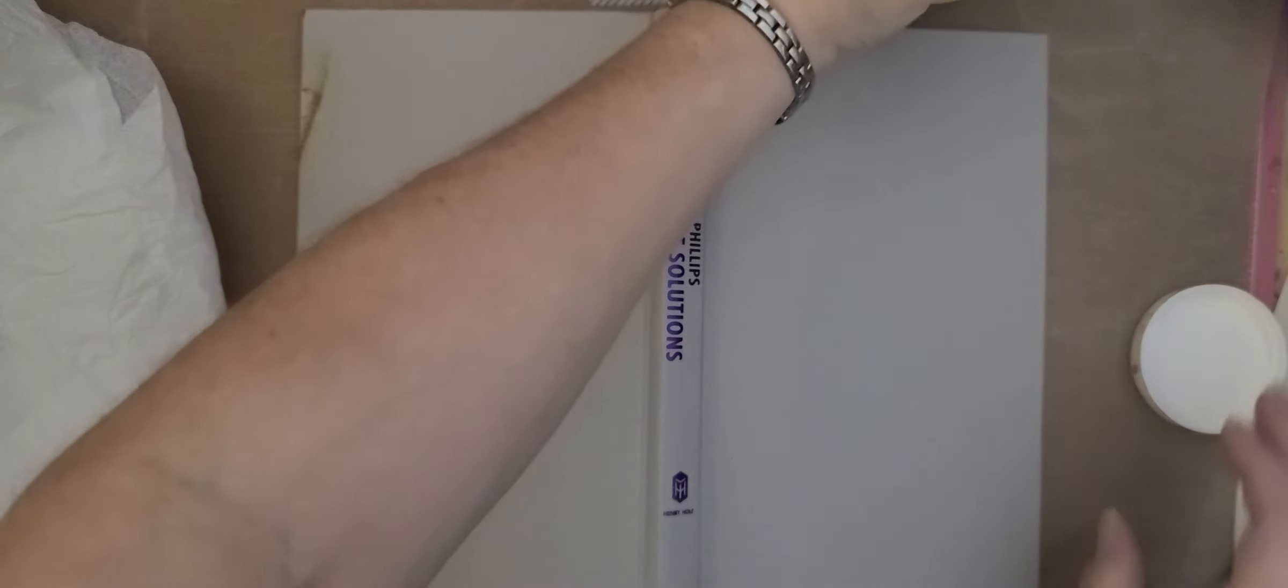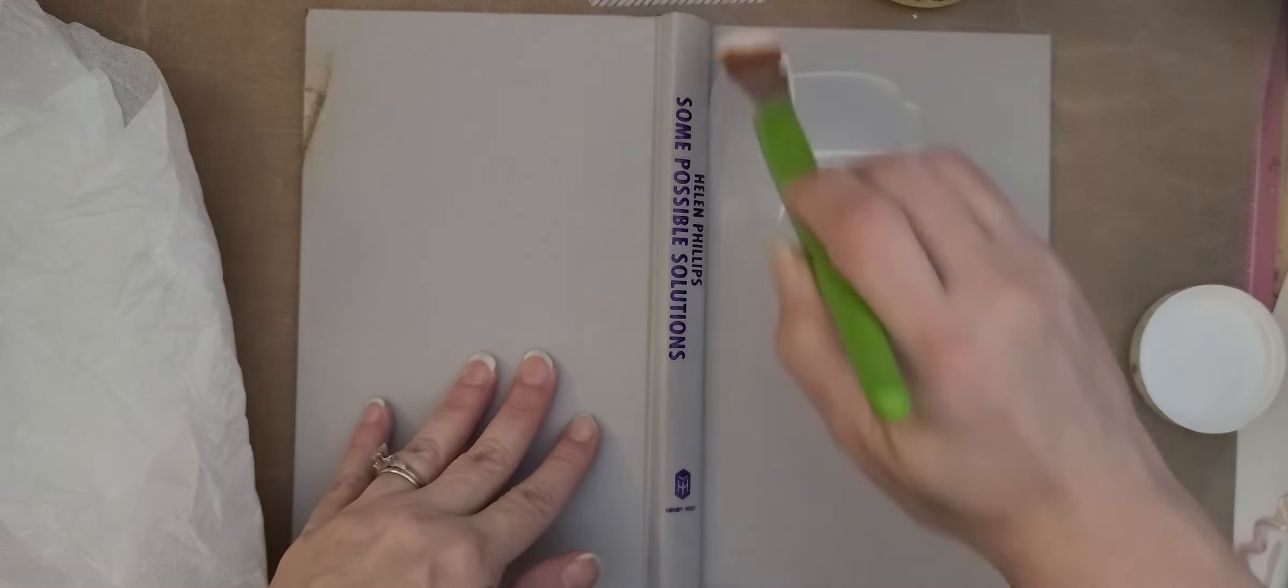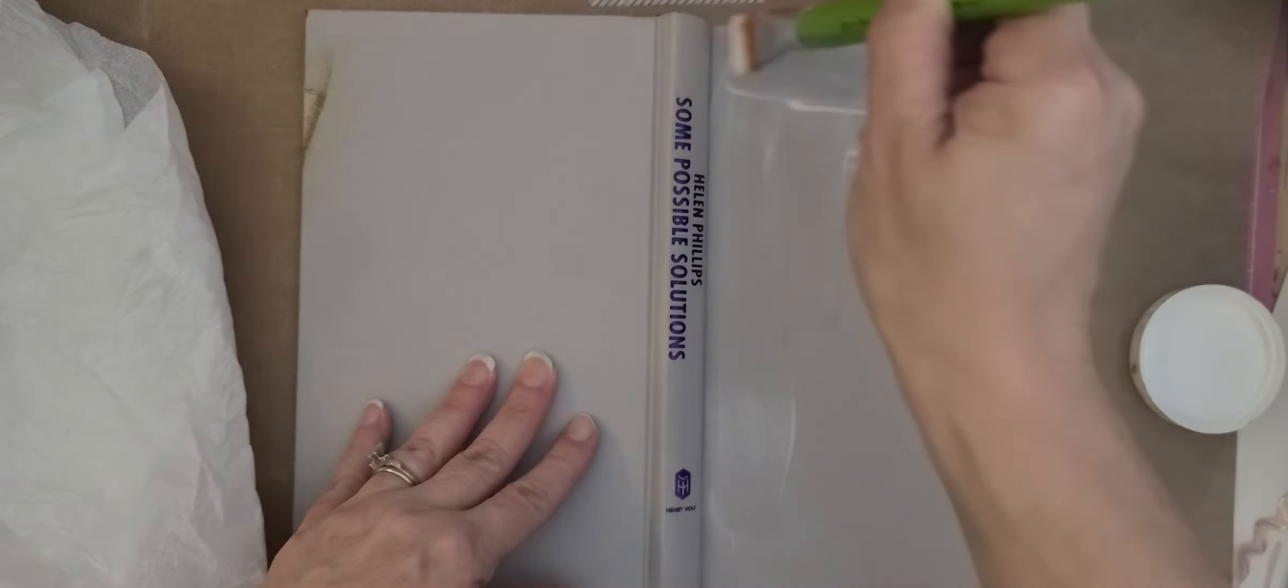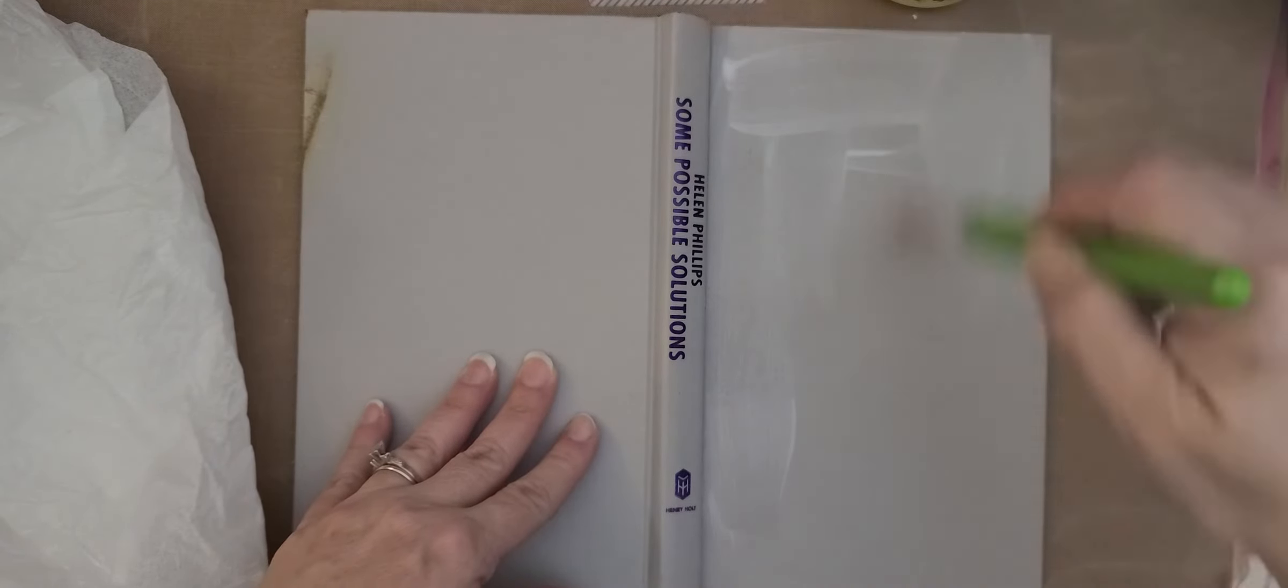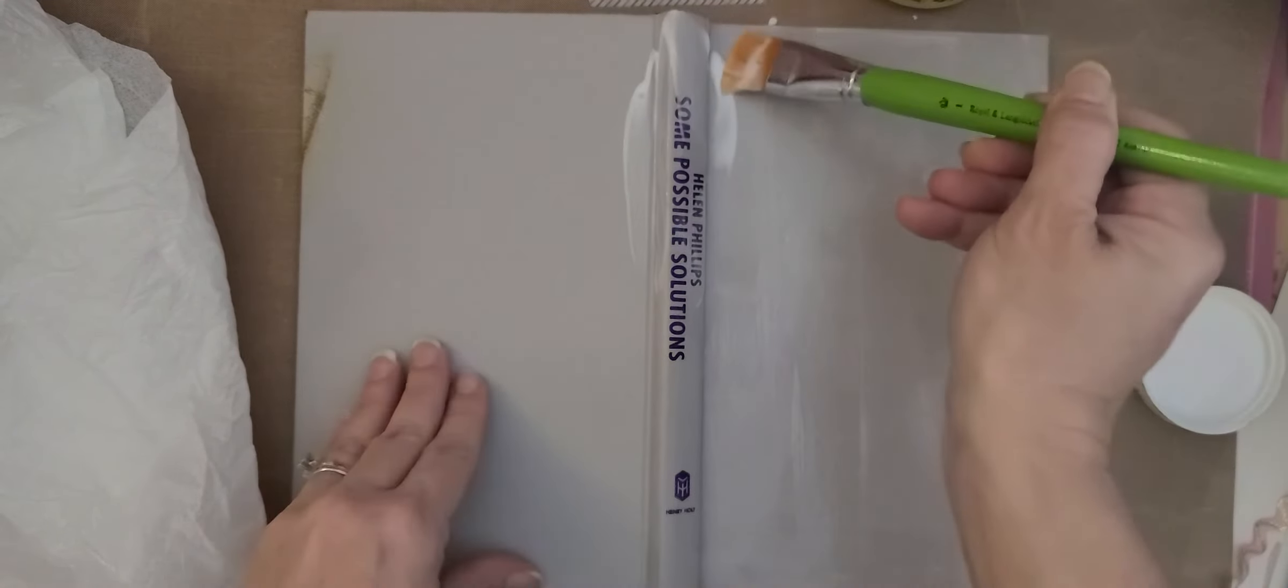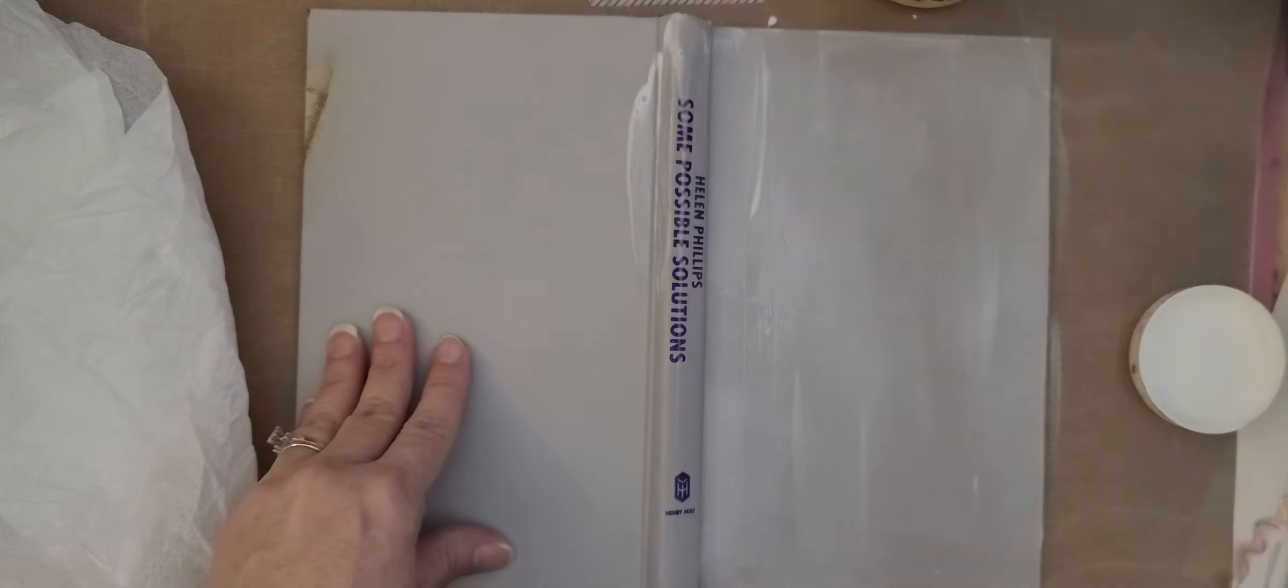We're gonna cover the whole book cover with the Mod Podge and then we're gonna crinkle up the napkin. I have my surface protected with my nonstick mat. I'm just gonna do the spine here too because I think I'm gonna start with the spine actually.